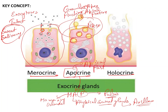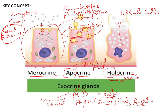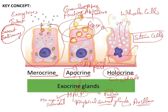In holocrine secretion, 'holo' itself indicates 'whole,' meaning the whole cell disintegrates and releases its entire content. The whole cell basically bursts and releases everything out. The base of these glands is made up of stem cells, which keep regenerating because so many cells are lost due to the constant bursting and disintegration.